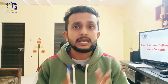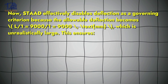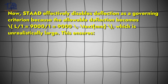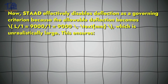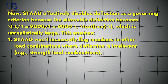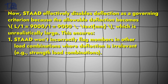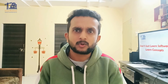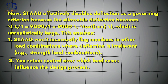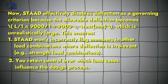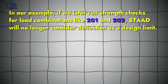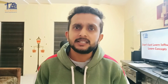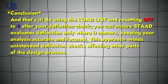By resetting DFF to 1, STAAD effectively disables deflection as a governing criteria, because the allowable deflection becomes L/1. For a 9-meter beam that is 9000 mm divided by 1, which equals 9000 mm — an unrealistically large value. This ensures STAAD won't incorrectly flag members in other load combinations where deflection is irrelevant, such as strength load combinations like 201 or 202, and you retain control over which load cases influence the design process.